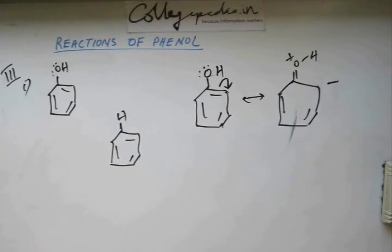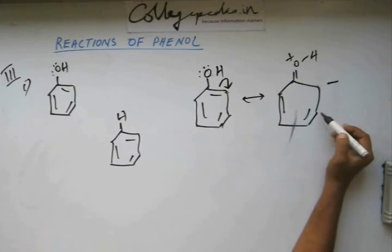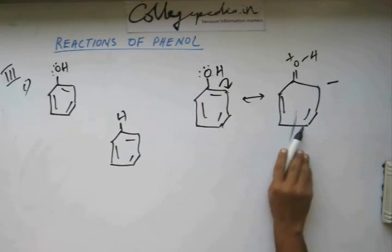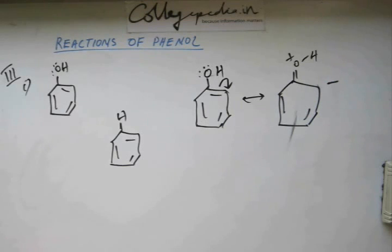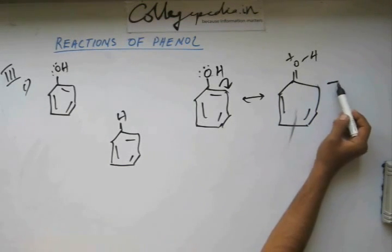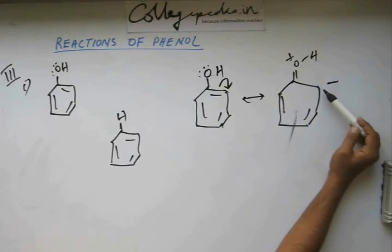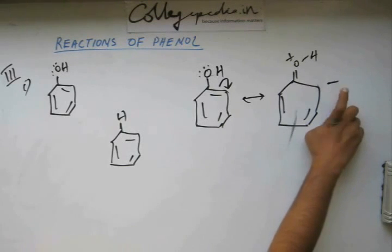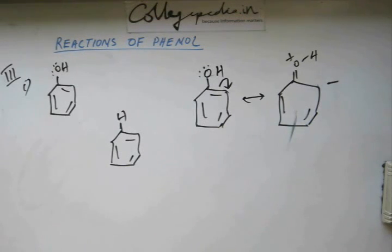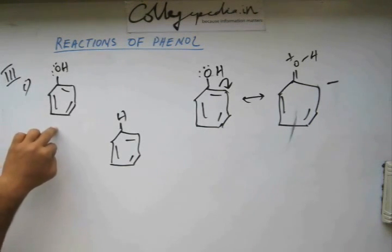This is the resonating structure that you are going to get, and in the next RS this negative charge is going to come here. In the next RS, this negative charge is going to come here. In the next RS, this negative charge is going to go back on oxygen, so oxygen is going to be neutralized. So there will be 5 RS. In 3 RS, the negative charges are on the ring at ortho and para positions. Negative charges are on ortho and para positions and phenyl ring is said to be an activated ring because electron is being pumped into the phenyl ring. Electron density is high so it is activated for reaction. Reaction in the phenyl ring will be much more vigorous than that of benzene.